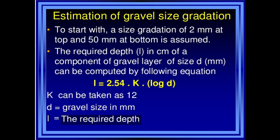For estimation of gravel size gradation, starting with a size of 2 mm at the top and 50 mm at the bottom is assumed. The required depth L in centimeters of a component of the gravel layer of size D mm can be computed by the equation: L = 2.54 × K × log D, where K is a constant taken as 12, D is the gravel size in mm, and L is the required depth.